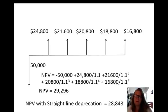In the previous video using straight line depreciation, the net present value was $28,848. We've increased the NPV by about $500, which is beneficial. It's good to increase NPV if we can take depreciation sooner.